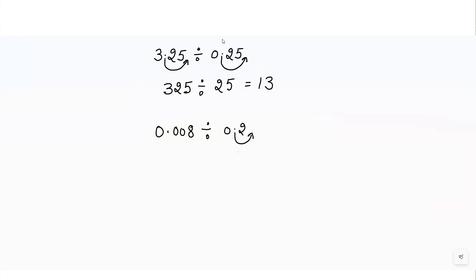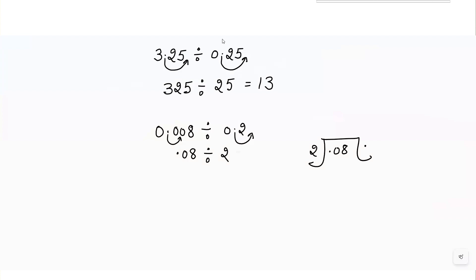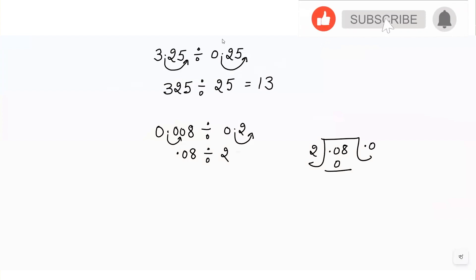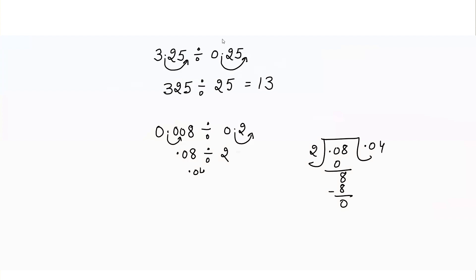Taking another example: 0.008 divided by 0.2. I shift the decimal one digit in the divisor, and also one digit in the dividend, giving 0.08 divided by 2. Since I already have a point, I put the point in the answer first, then divide: 0, then 0, then 8 — 2 fours are 8 — so the answer equals 0.04.